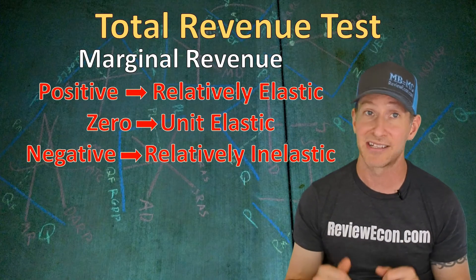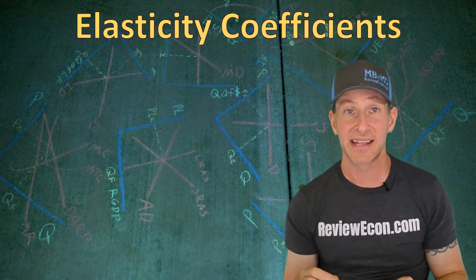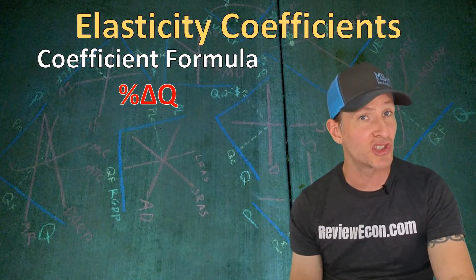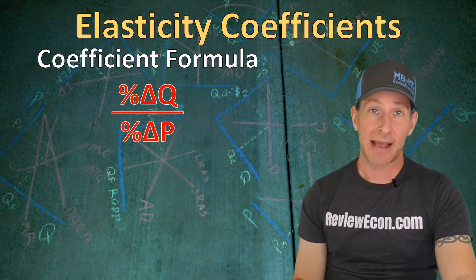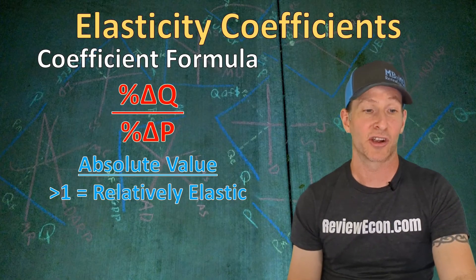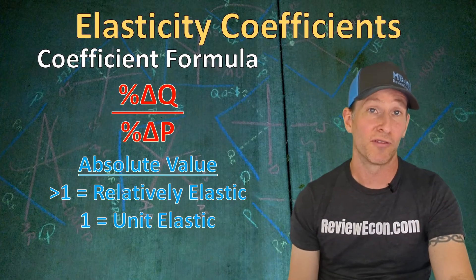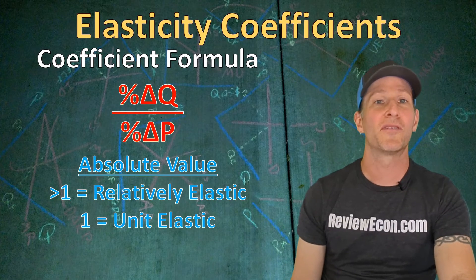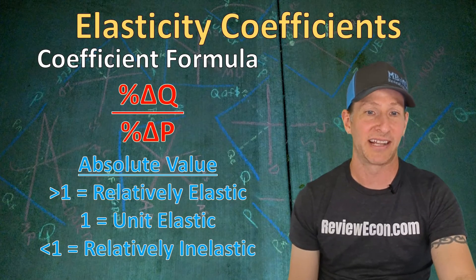Our last test for determining price elasticity of demand is calculating elasticity coefficients. The formula is the percentage change of quantity divided by the percentage change of price. For demand curves, you will always get a negative coefficient, but we take the absolute value to determine elasticity. If the absolute value is greater than 1, the demand curve is relatively elastic and consumers are price sensitive. If the absolute value equals 1, the demand curve is unit elastic. If the absolute value is less than 1 — a decimal — the demand curve is relatively inelastic.